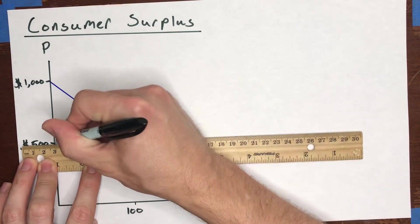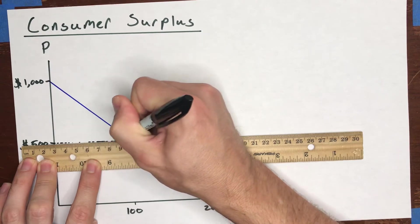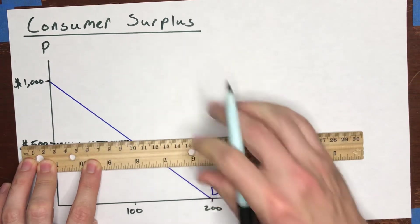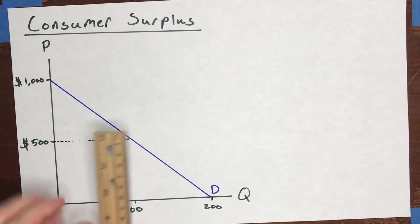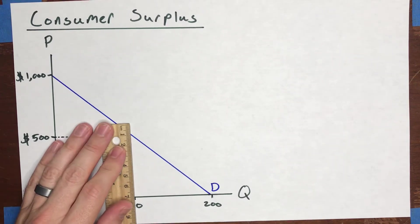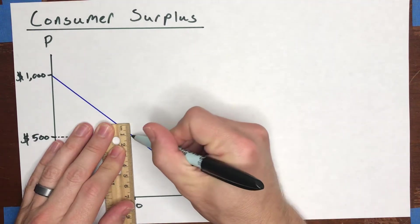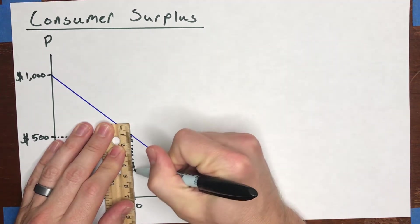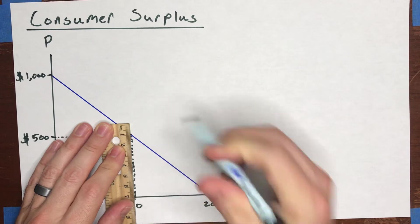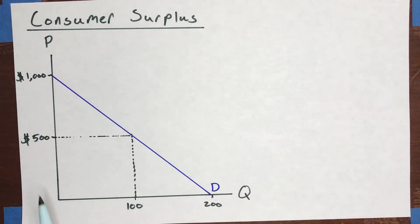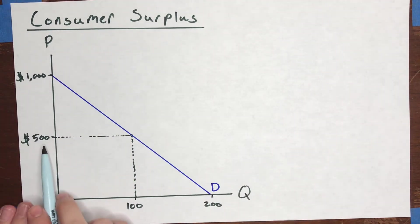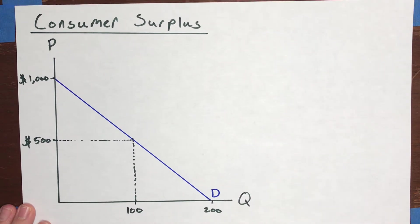So we would just draw a line across from $500 until we hit the demand curve and then straight down from the demand curve until we hit the quantity. Notice that at a price of $500, there would be 100 units that were sold.